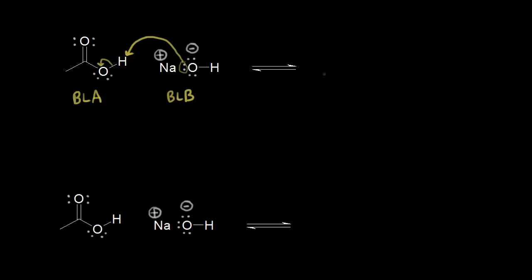So let's draw the products of this acid-base reaction. On the left, we would have our carbon double-bonded to our oxygen, and then now this oxygen would have three lone pairs of electrons around it, which gives this oxygen a negative one formal charge. We'd also have a sodium cation here — we could think about that as an ionic bond.